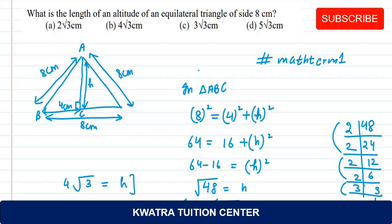4 root 3 is the height involved. The height is 4 under root 3 cm. So this is your answer, B part. Thank you for watching, have a great day. Next question, let's go.